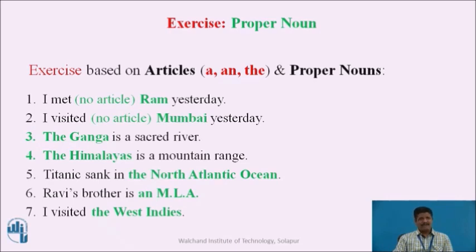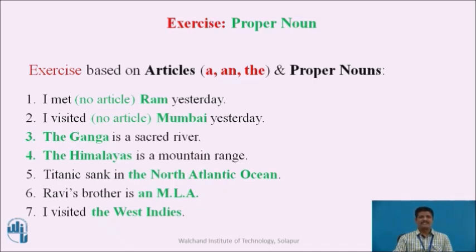Now let us do an exercise based on articles and proper nouns. Generally, we do not use articles with proper nouns. In sentence 1, 'I met Ram yesterday' — Ram is a proper noun, so we use no article. We cannot use 'a' or 'an' before Ram, nor 'the,' because Ram itself definitively refers to that particular person.